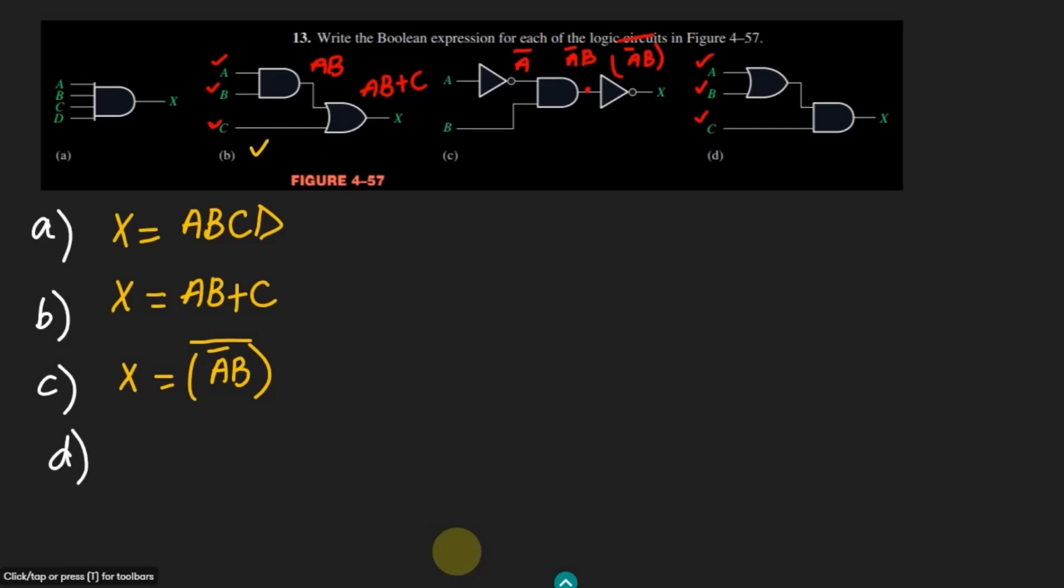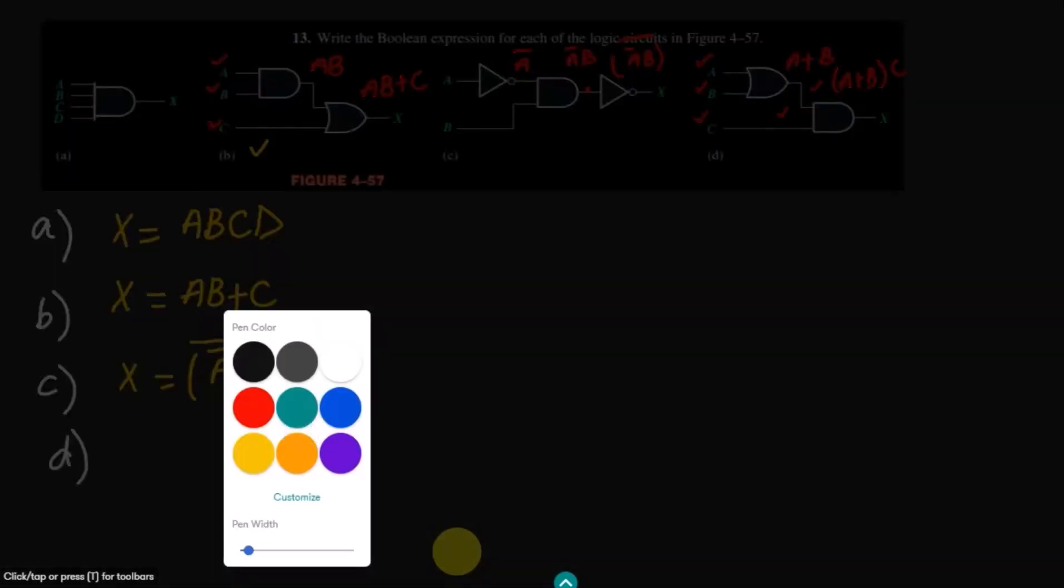The first gate here we have is this OR gate. To this OR gate A and B are applied, so A and B will be added together. Then this input and this C will be applied to this AND gate and we can see that the output from here and here will be multiplied together. So therefore we will get A plus B multiplied by C.